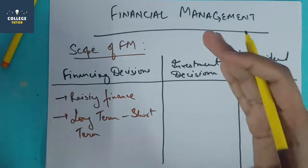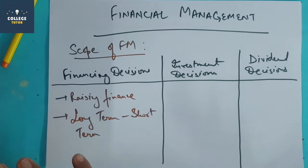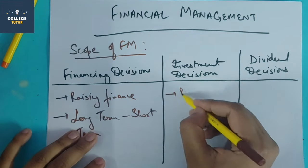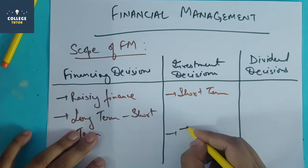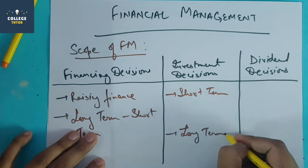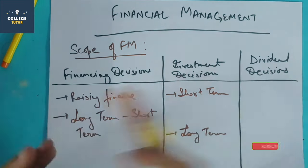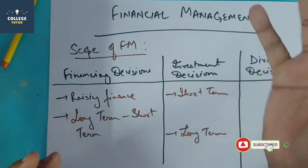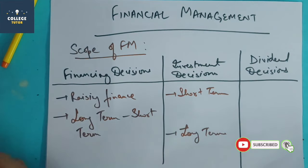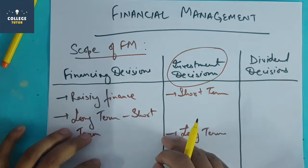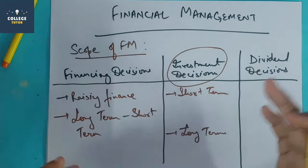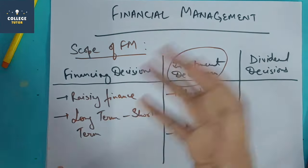When we talk about investment decisions, it is about where to invest and how to allocate investment — short term or long term. Short-term investments include temporary machinery and stock, while long-term investments include factory assets. These are the investment decisions, which are among the most important.